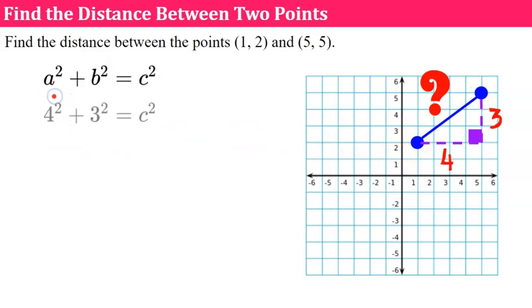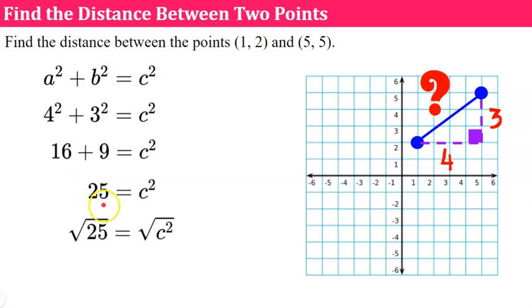So we're going to do 3 squared plus 4 squared equals C squared. 4 squared is 16. 3 squared is 9. Add 16 plus 9. You get 25. To solve for C, we're going to take the square root of each side. And the square root of 25 is 5. And the square root of C squared is C. So we know that this diagonal length is 5 units.